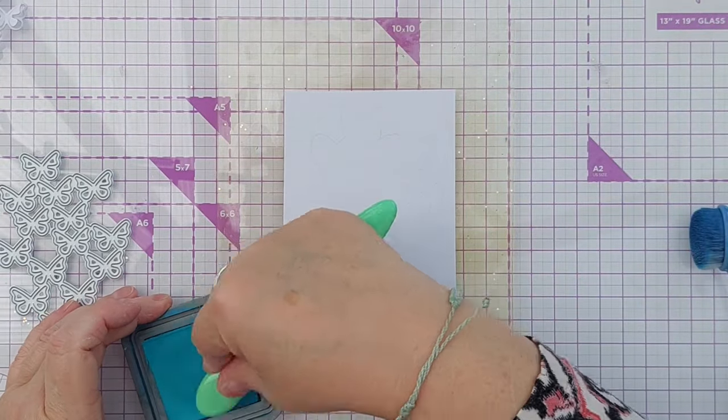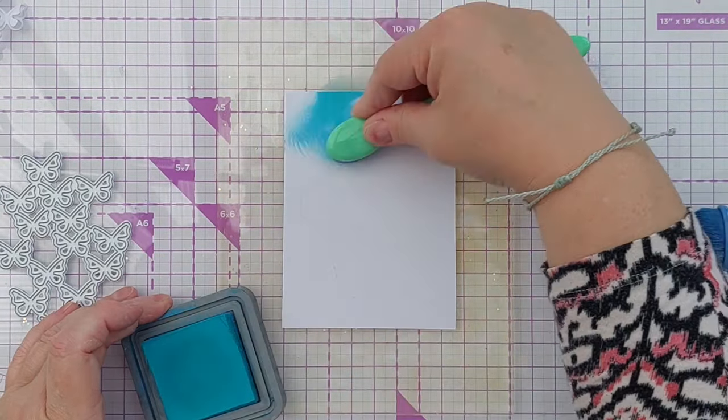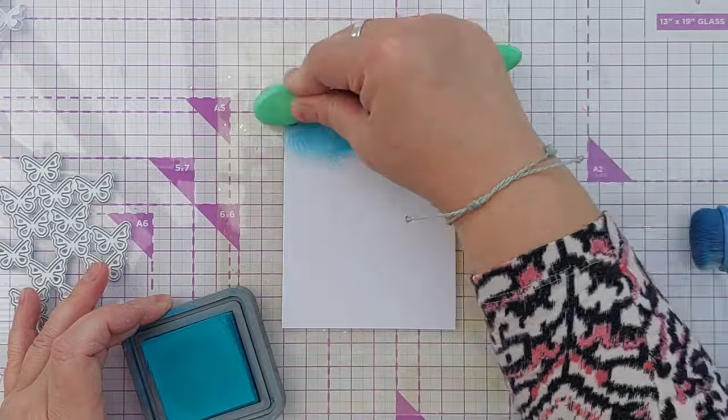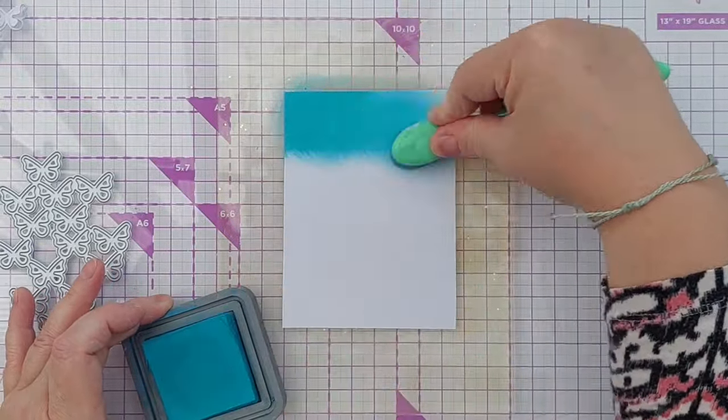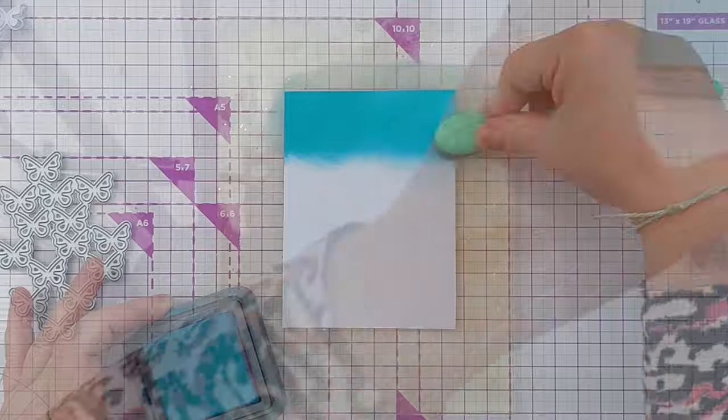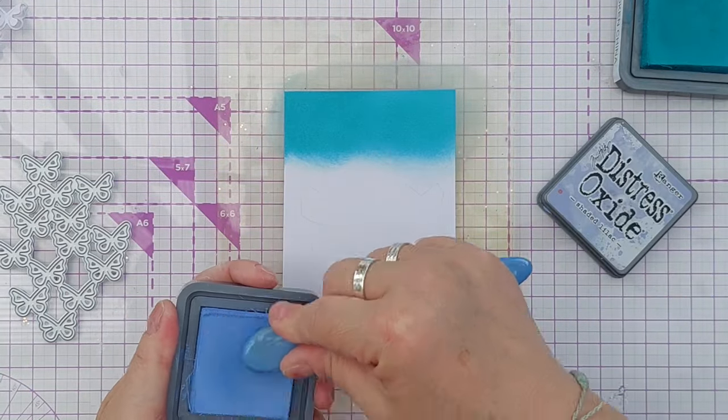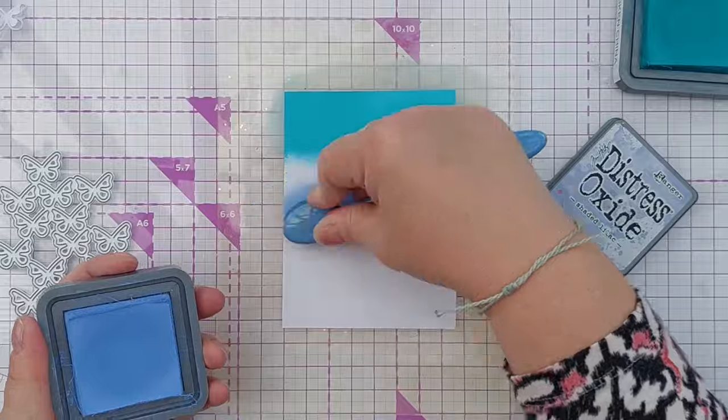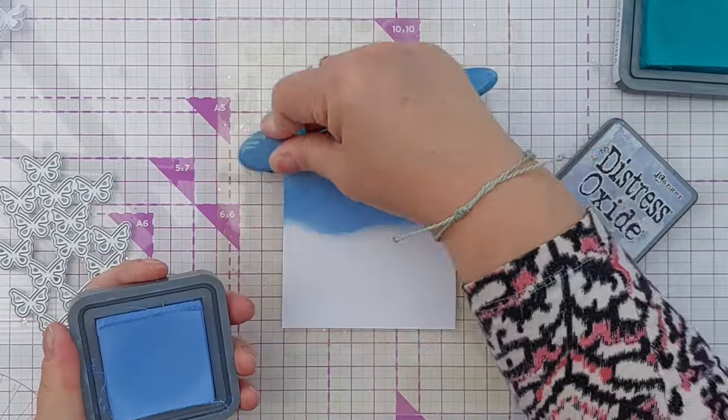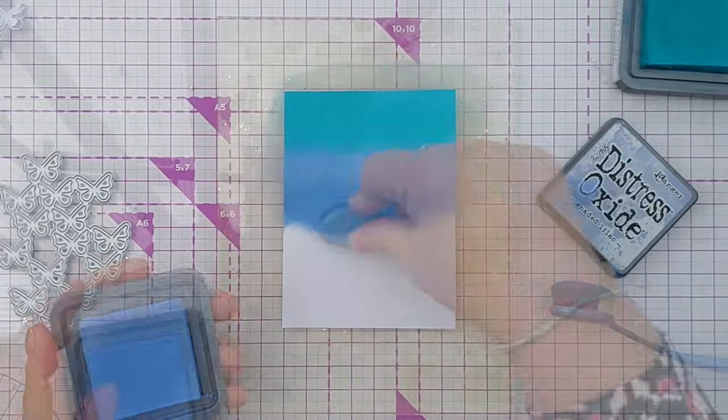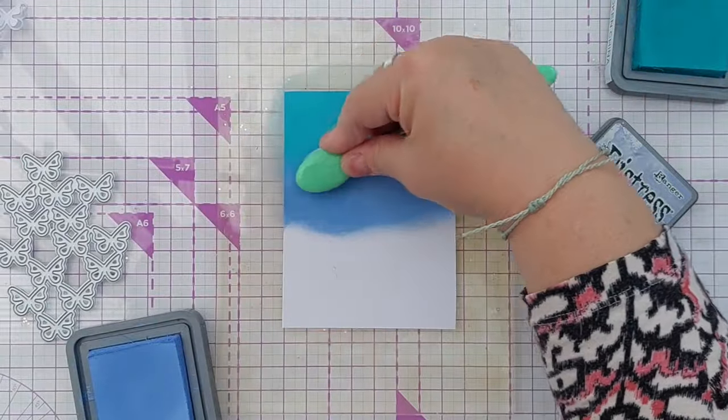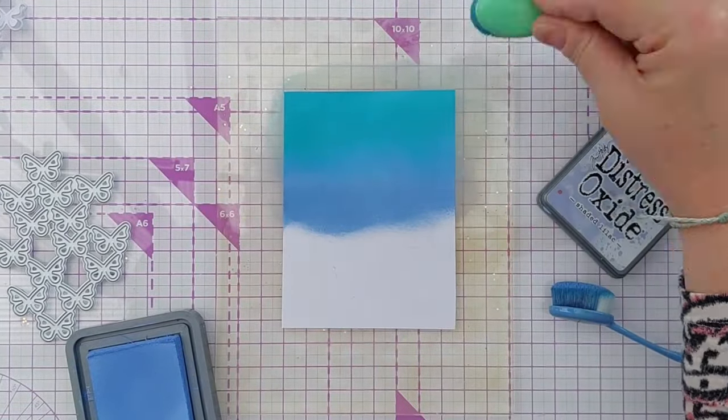I'll start with Broken China and have that coming in from the top, and then I think we'll have a bit of shaded lilac in the middle, just bring the Broken China back in to get a nice smooth blend.